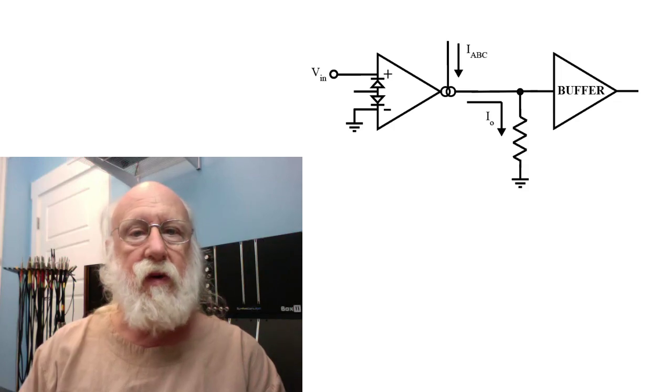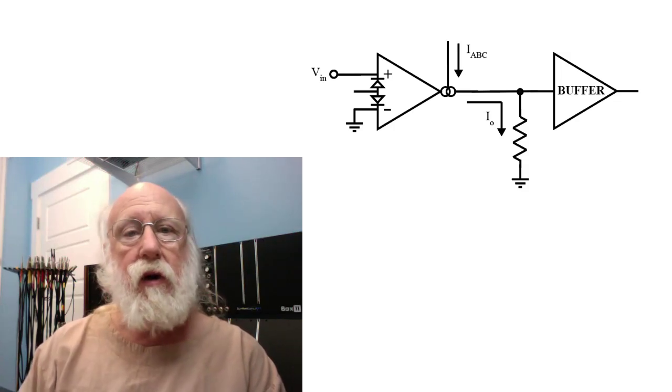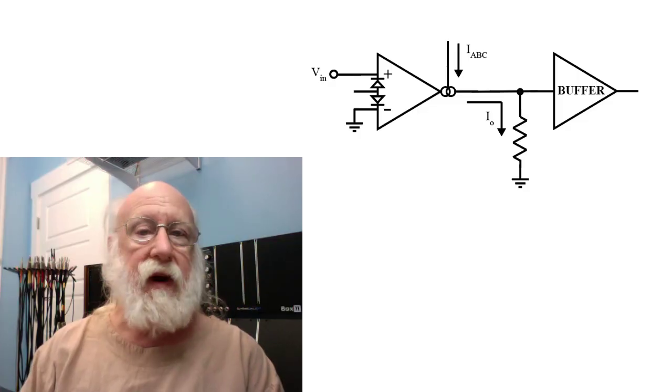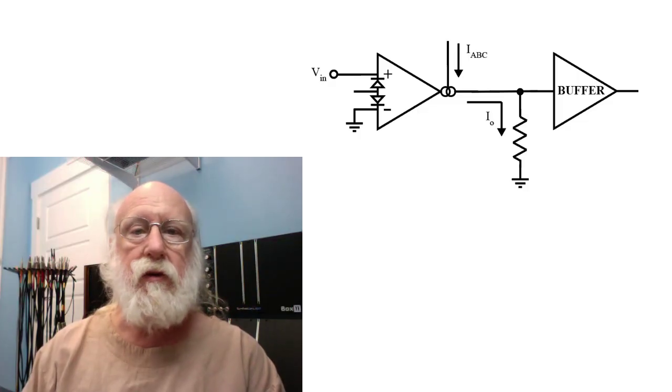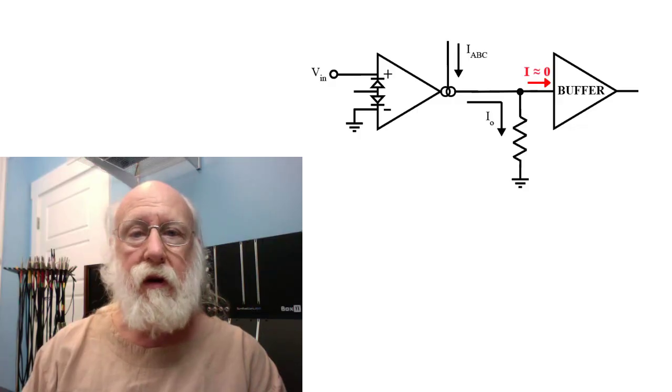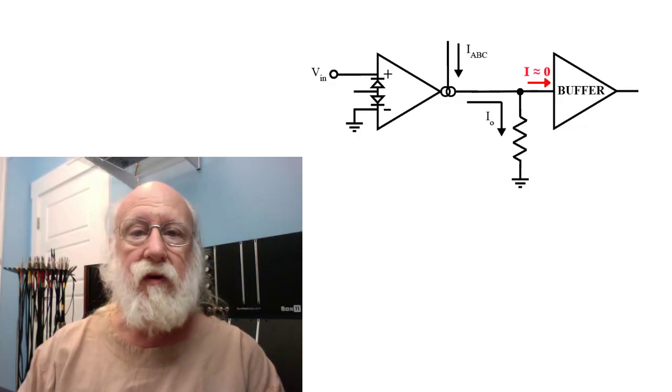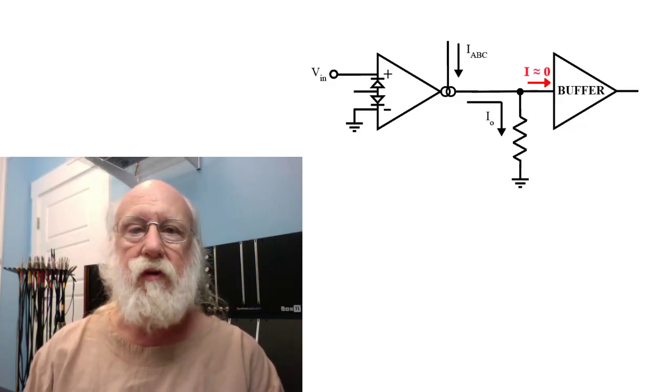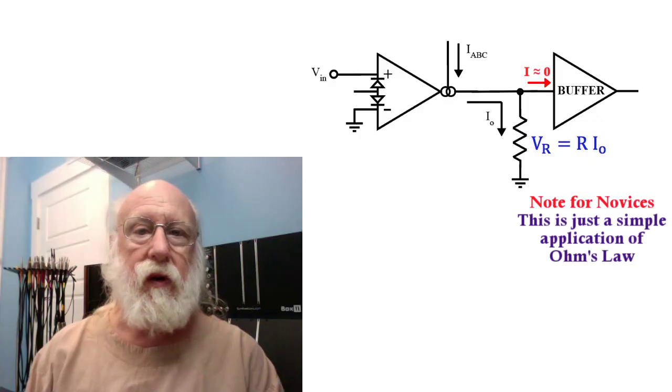The difference here is the way that we buffer that voltage on the resistor. Your buffer must be a very high impedance device because you do not want it stealing any of the current. You want all of that to go through the resistor so that the voltage across the resistor truly is proportional to the current coming out of the OTA.